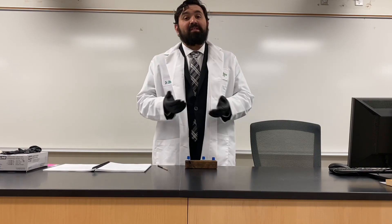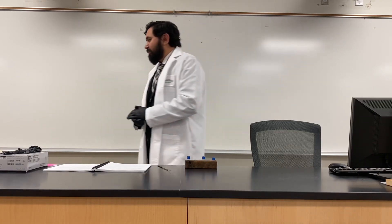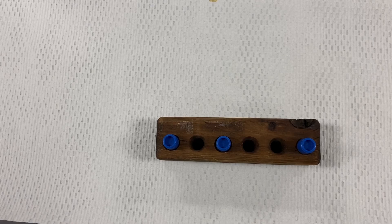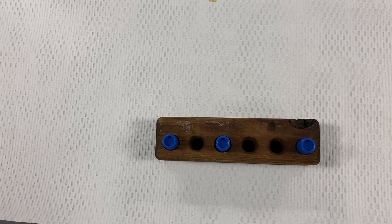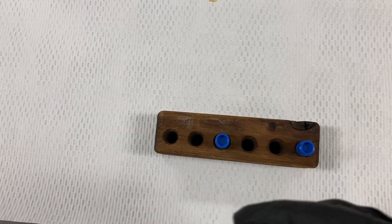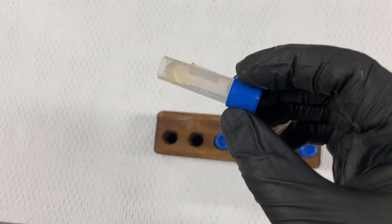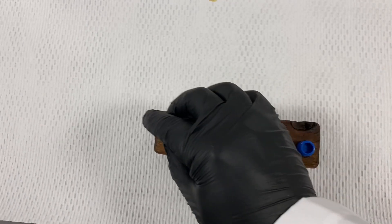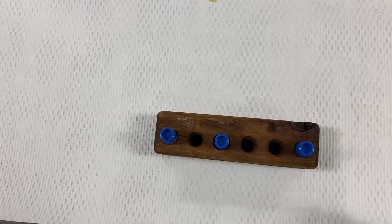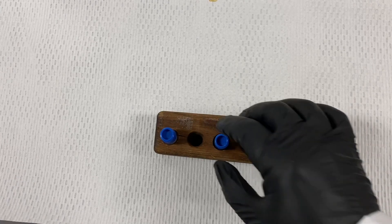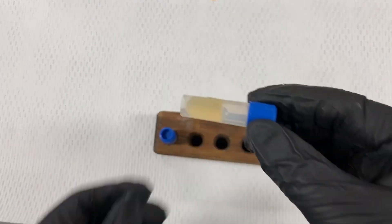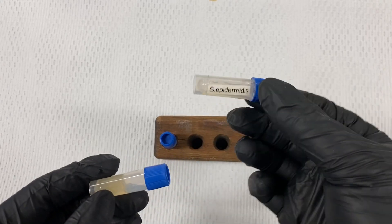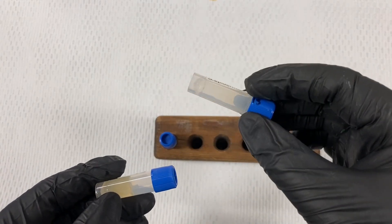Organisms that possess coagulase are pathogenic. For Lab 26, we test the production of coagulase using rabbit citrated plasma — the plasma present in blood. As you can see, it's liquid. Organisms that possess the coagulation enzyme will cause the plasma to coagulate, while organisms that do not possess it will keep it liquid.